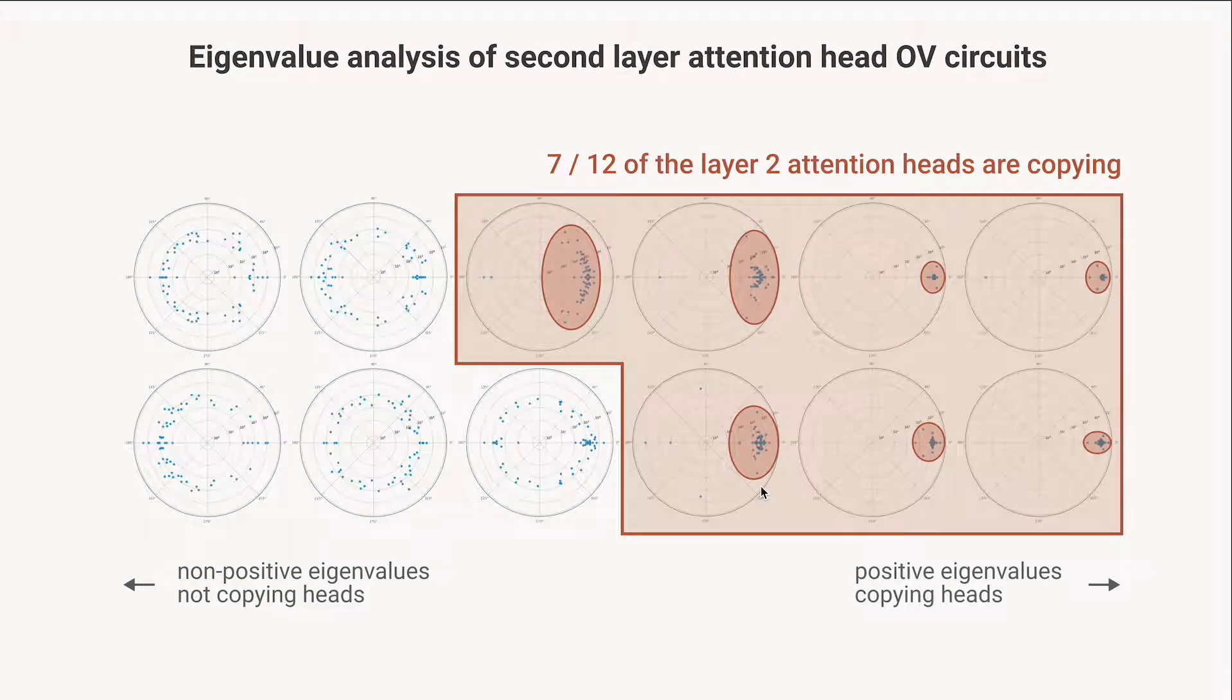Last time we saw that really the behavior of our two-layer transformers is mostly described by understanding the second-layer attention heads. There's 12 of those, and of those 12, seven are doing copying. So it's a little bit less than the one-layer model, but still the majority of our attention heads are doing copying. And we're going to see that they're doing a much more interesting type of copying and a much more powerful type of copying than the one-layer model was.